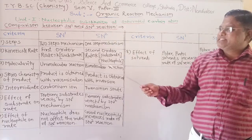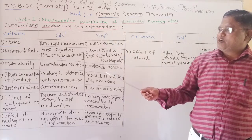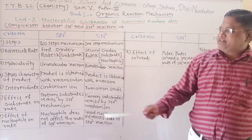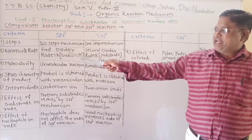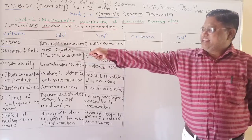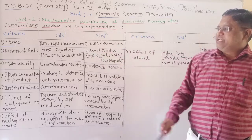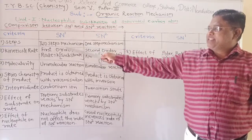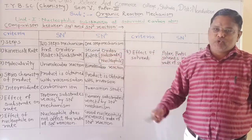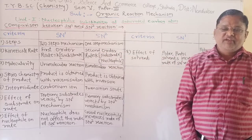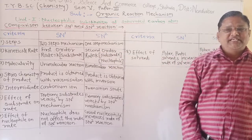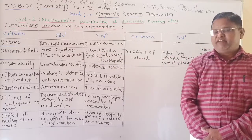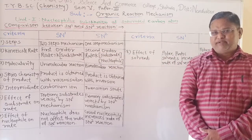This comparison is based on 8 criteria. The first criteria is the steps. In SN1 mechanism, there are 2 steps. The first step is a slow step and the second step is a fast step.